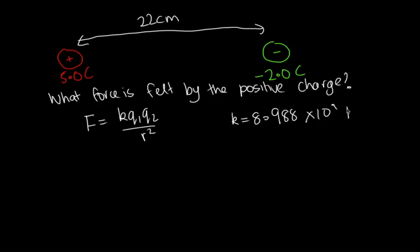And the units are newtons, meters squared, and then Coulomb to the minus 2. Now r, the distance, is equal to 22 centimeters. We need to convert that into meters. So to convert from centimeters to meters, we divide by 100. So this is equal to 0.22 meters.